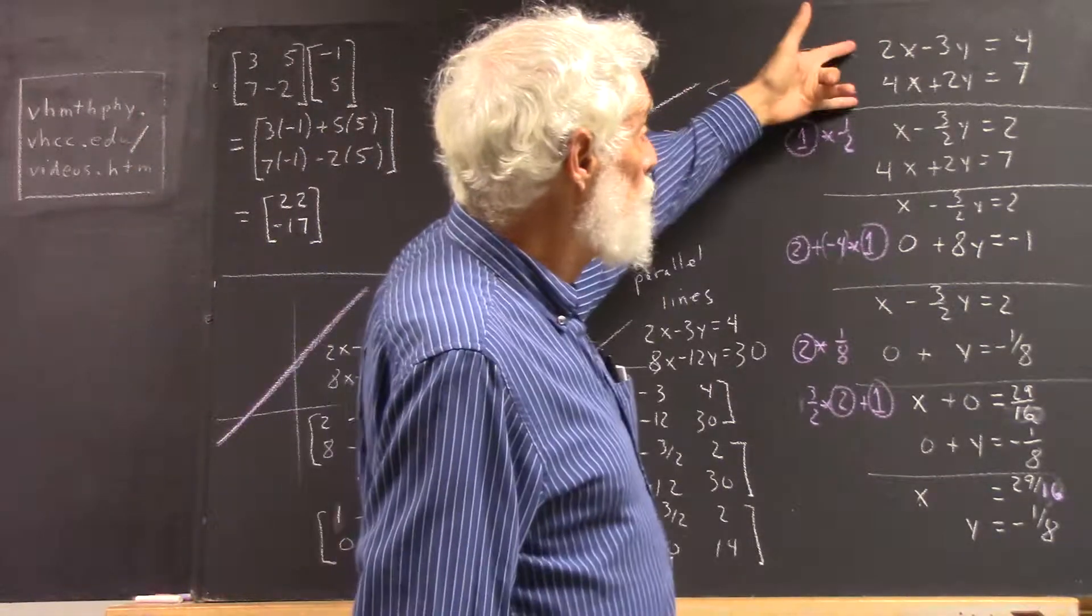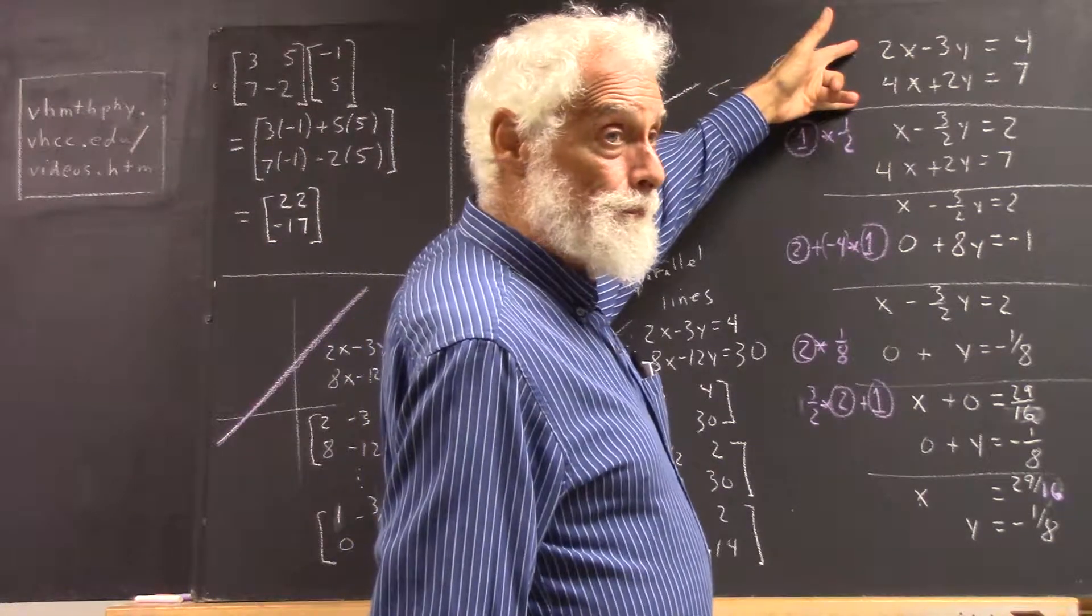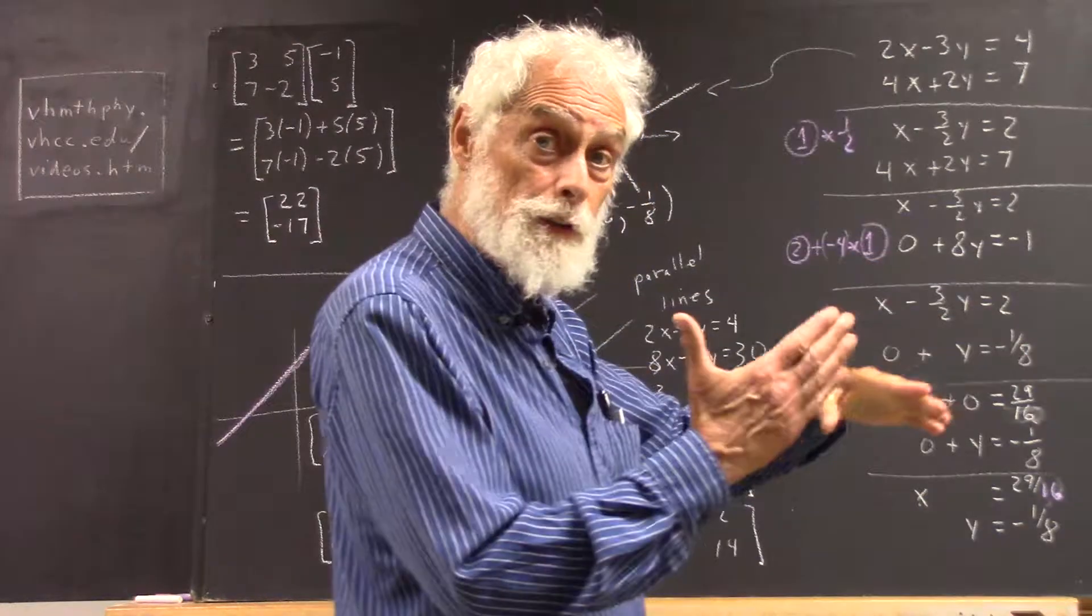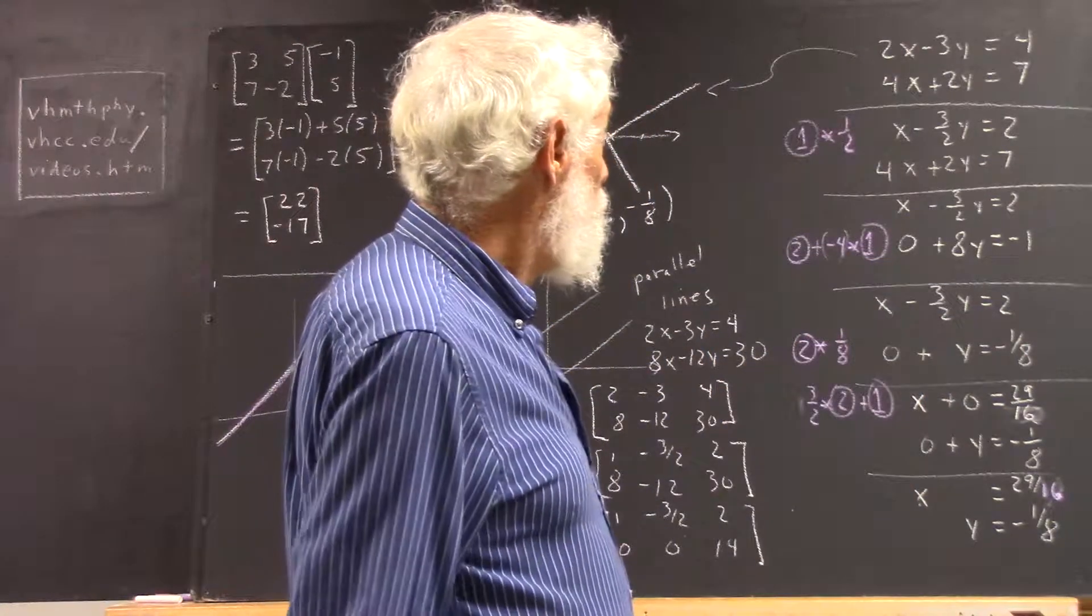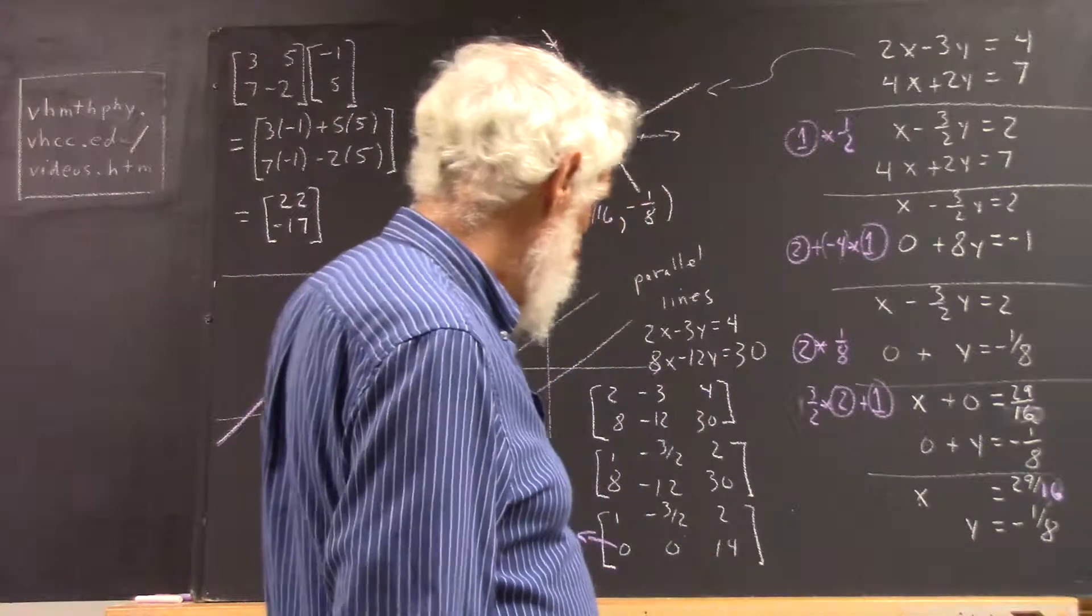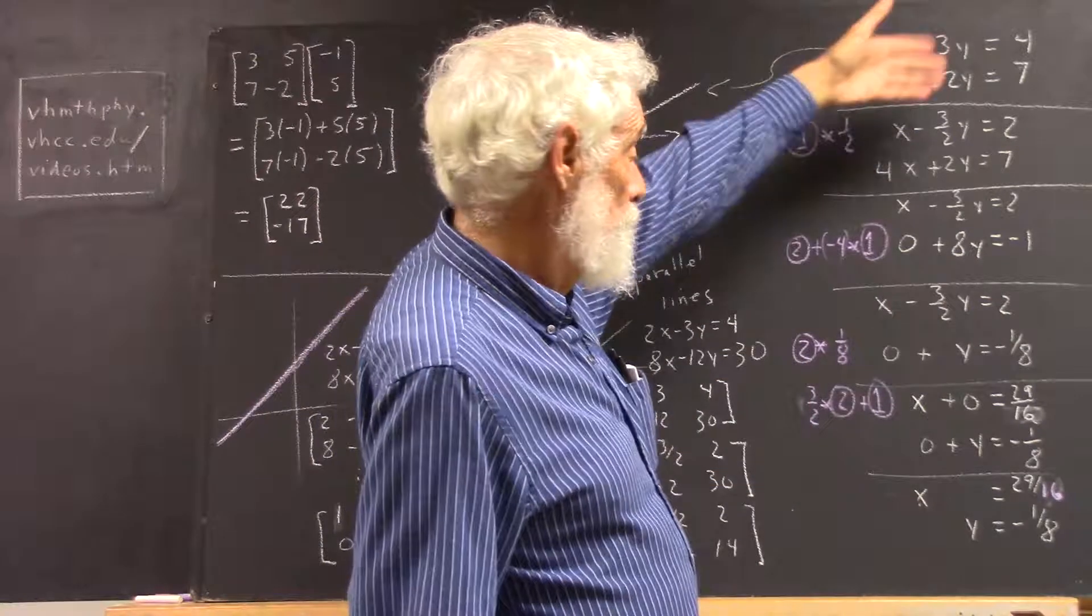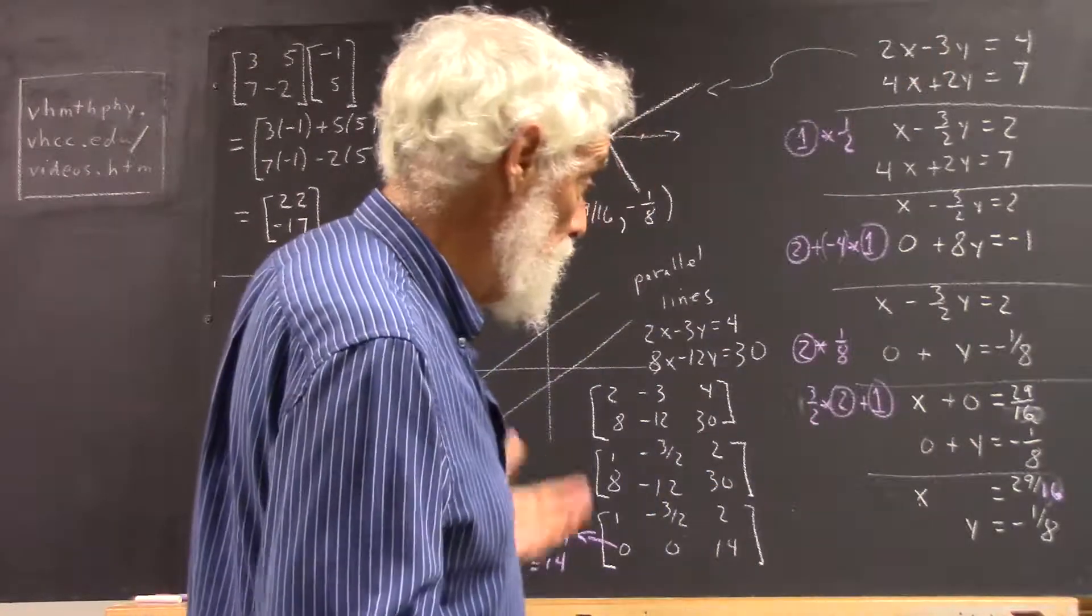So, if our two equations give us straight lines with different slopes, they have to intersect. And this is how we can find the intersection. We can do the matrix reduction, which is easier than writing out all the x's and y's, and it means the same thing.